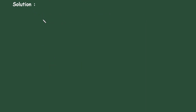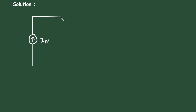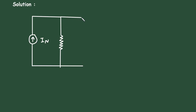Let's see what Norton's theorem is. Norton's theorem states that a linear two-terminal circuit can be replaced by an equivalent circuit consisting of a current source in parallel with resistance Rn. Where In is the short circuit current at the terminals, and Rn is the equivalent resistance at the terminals when all the independent sources are turned off. It is connected in parallel with load resistor Rl.